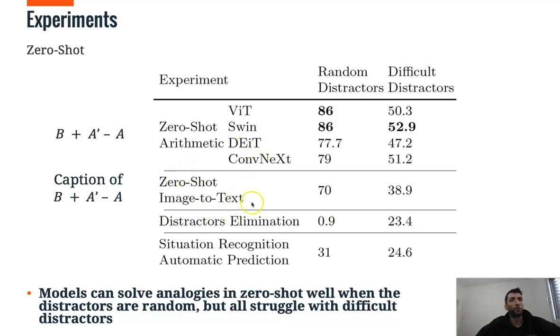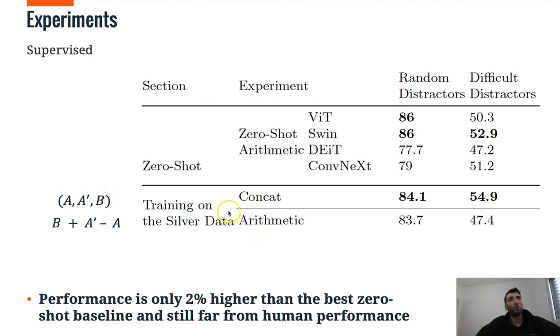Here this is a previous work which instructs image caption given the arithmetic representation. Here we try some kind of distractors elimination like in a quiz with multiple choice and more. For supervised experiments, we see that the performance is only 2% higher than the zero-shot baseline. But still far from human performance,